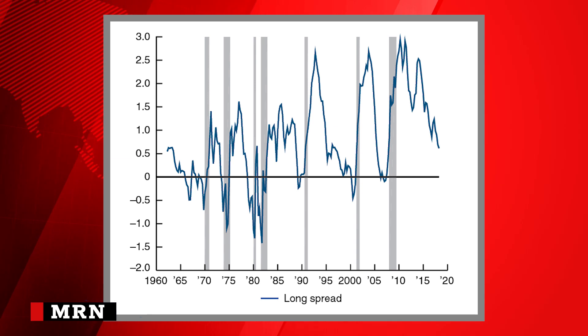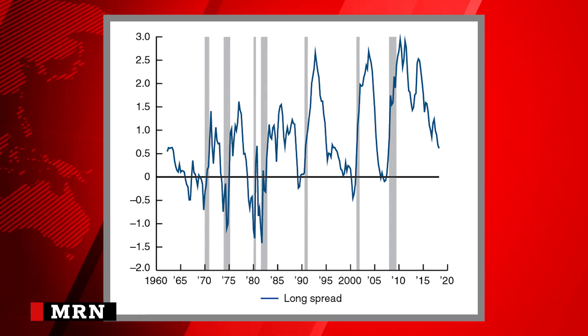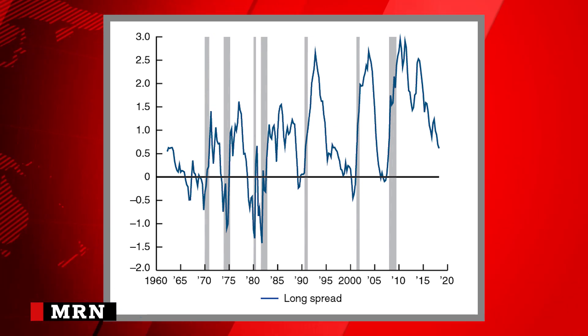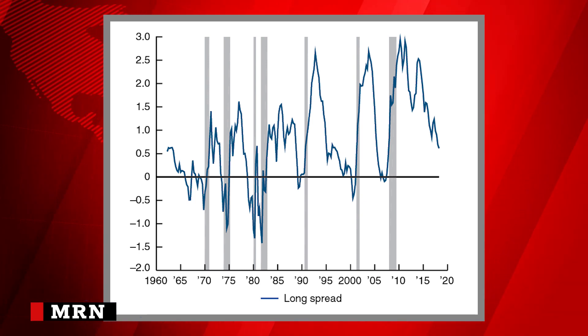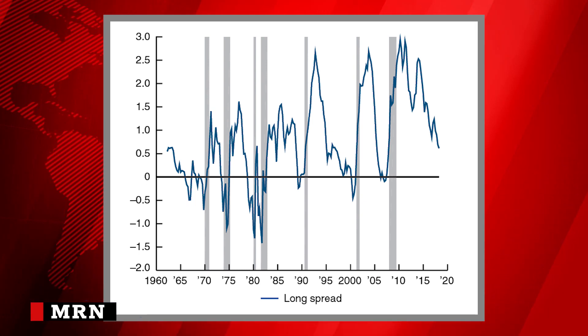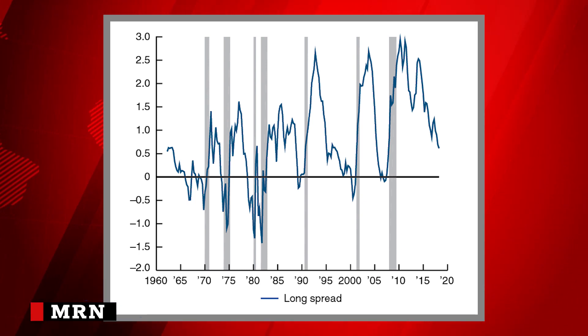The truth is that there is an inverted yield curve. To understand why this is so serious, we must first understand what an inverted yield curve is. This graph shows the term structure slope, which is measured by the spread between the yields on 10 and 2-year U.S. Treasury securities.